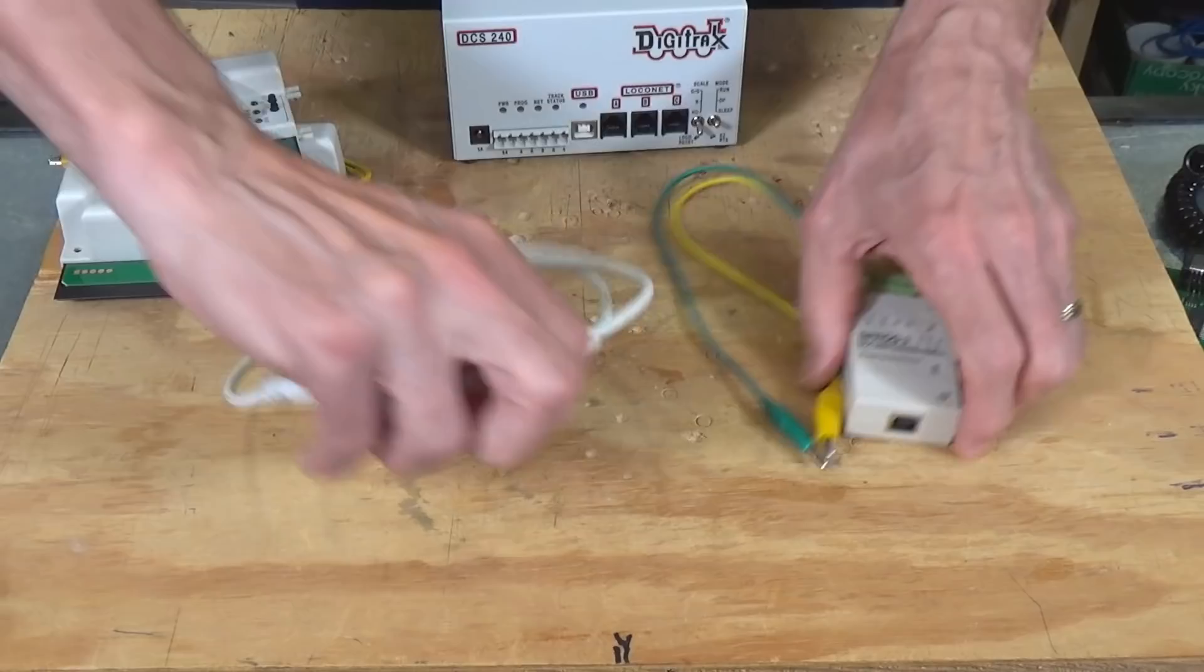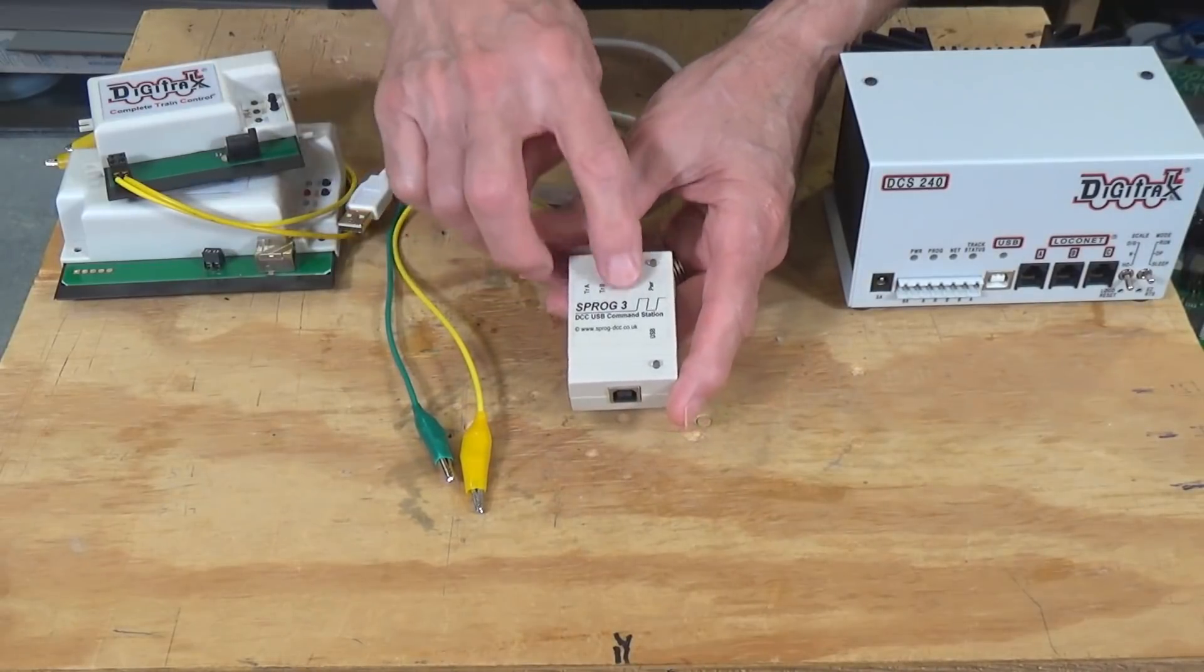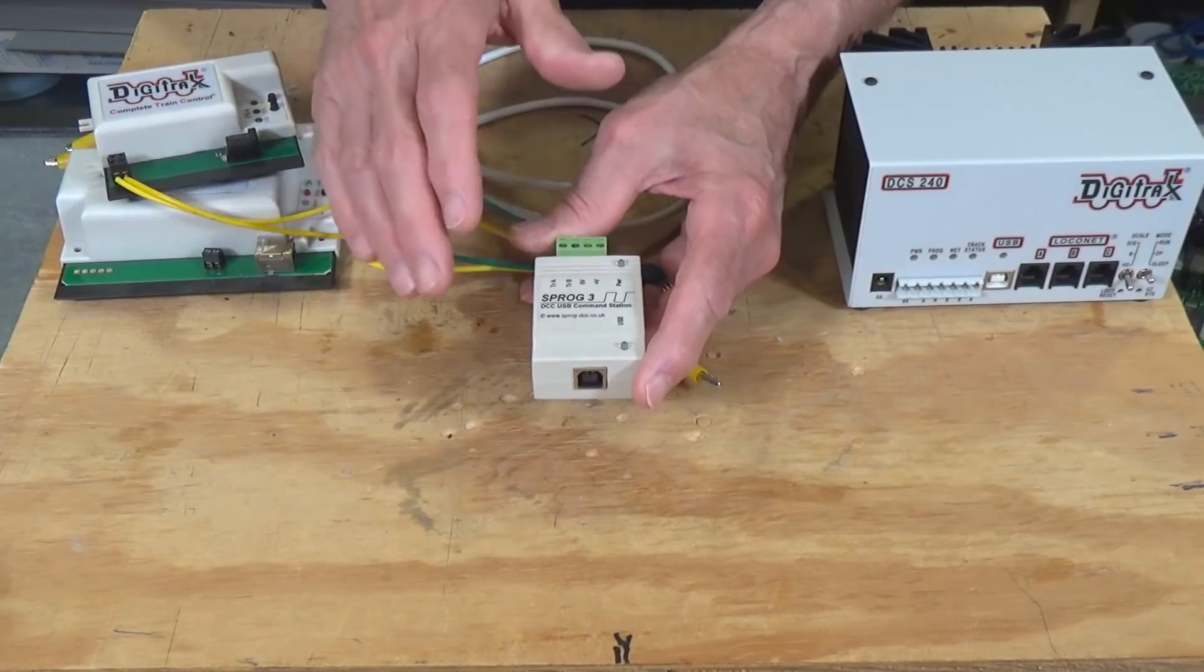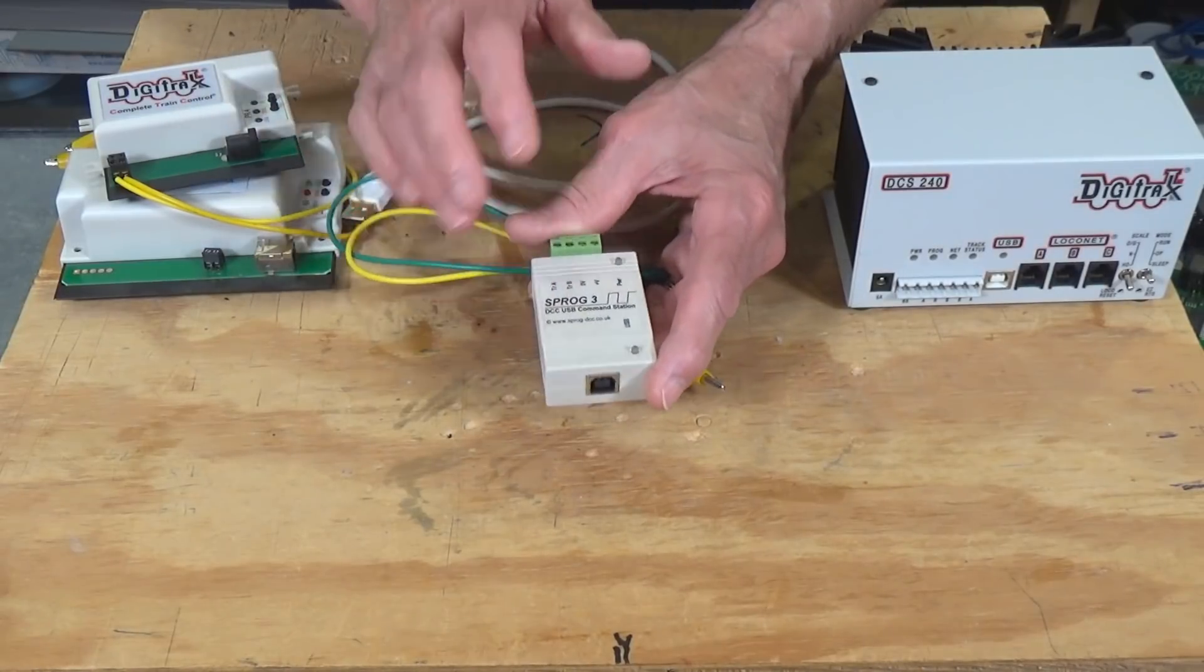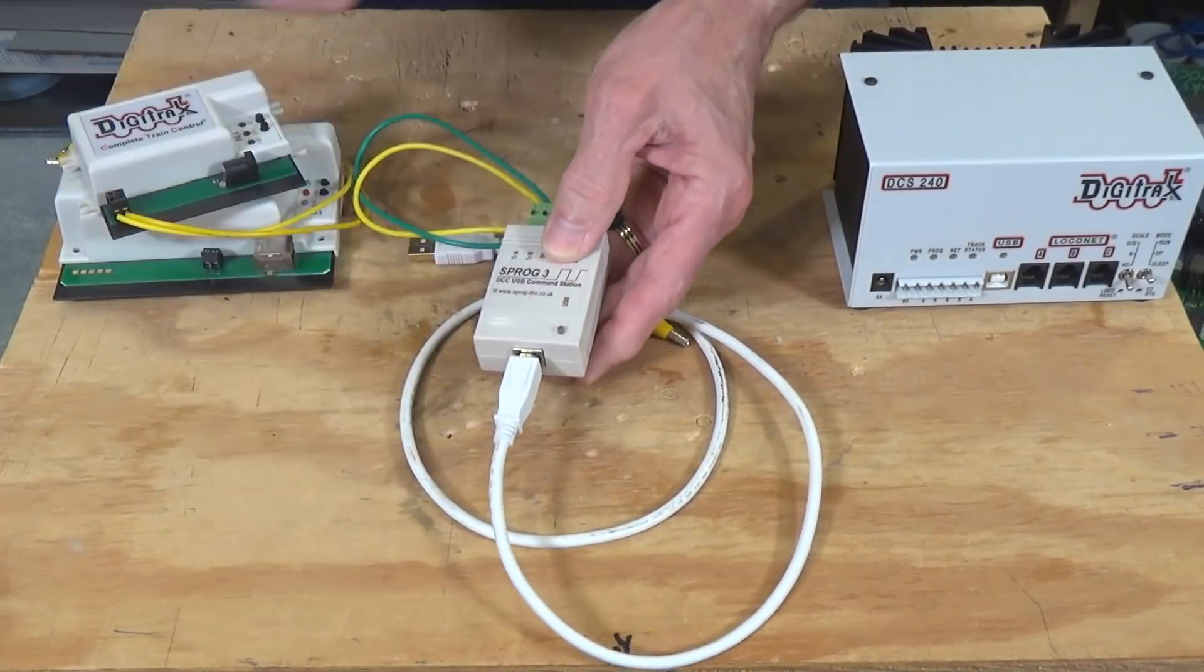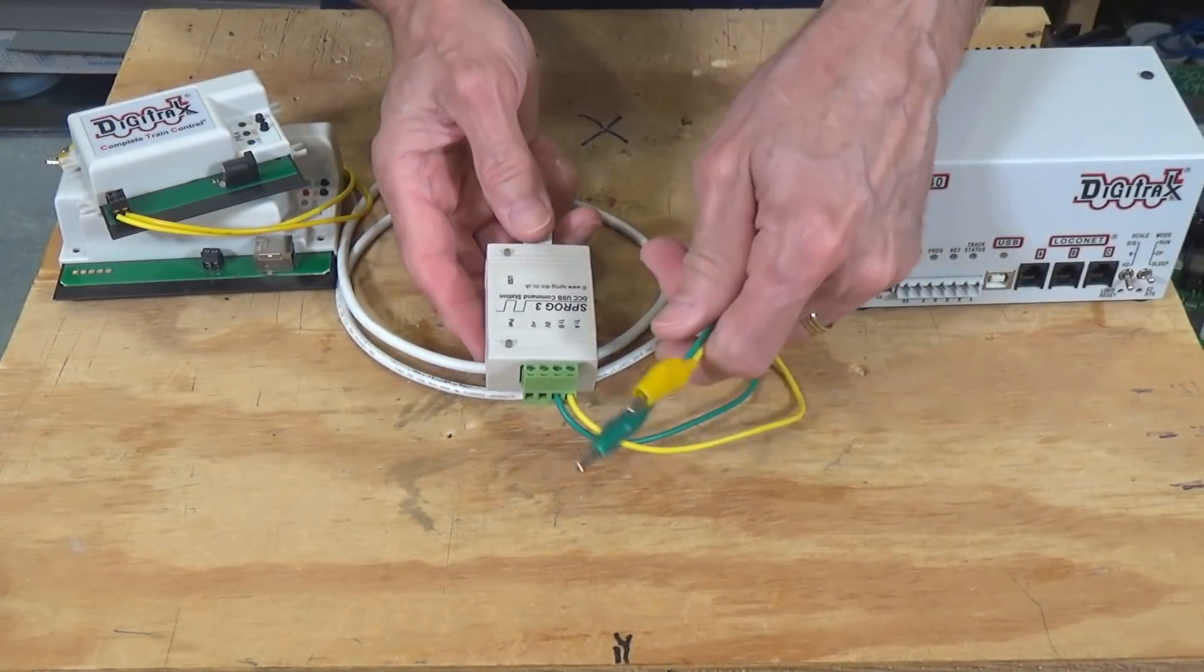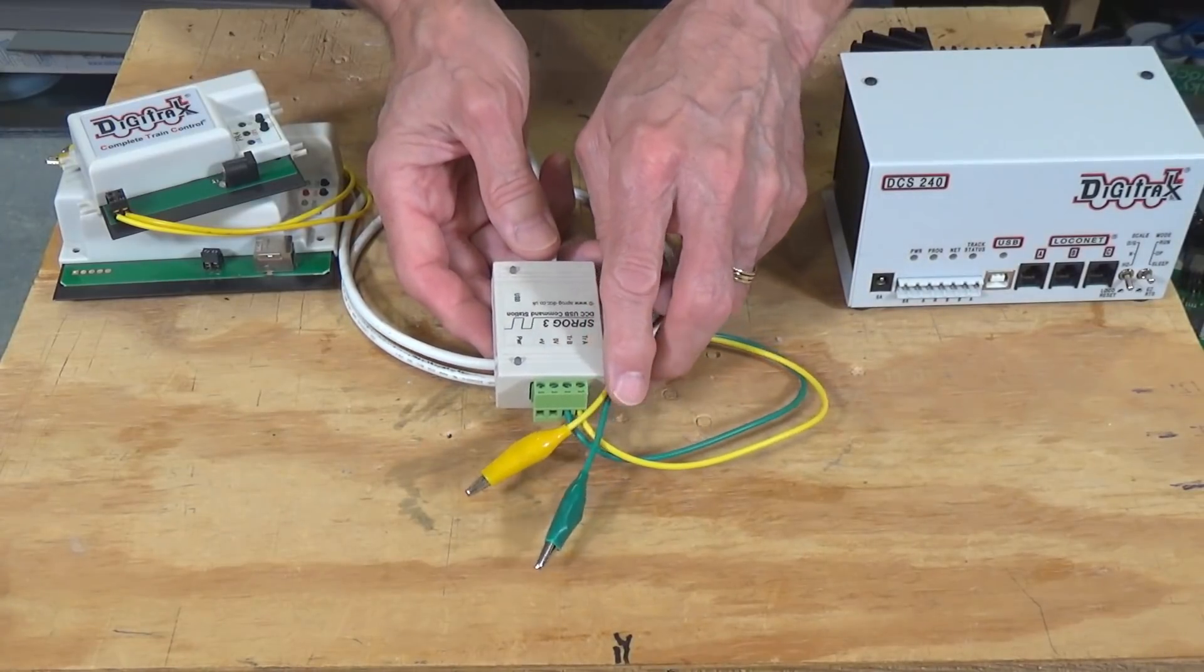Let's take a look at another one here that I really like. This is a Sprog 3. There's also the Sprog 2 and various other versions available. And this particular device, it can act as a command station or just as a booster, basically. And you can use it for programming. So it's a very simple interface option. You just plug it in again, like all of these, to your USB cable and into JMRI. And then you can hook it up at this end to your track connections and have a programming track, for example. And then you can use this as a standalone programmer.